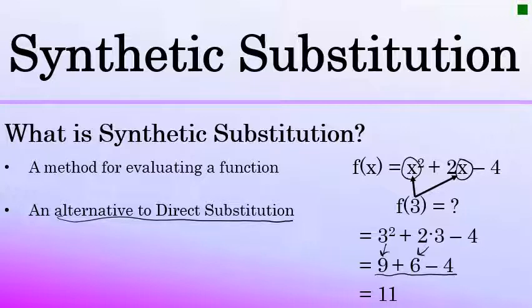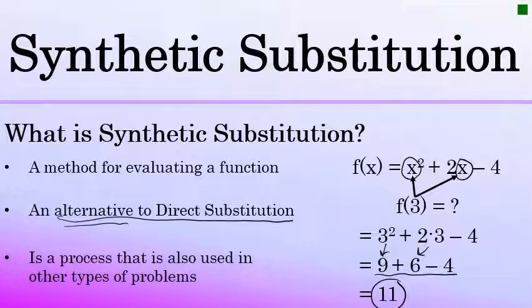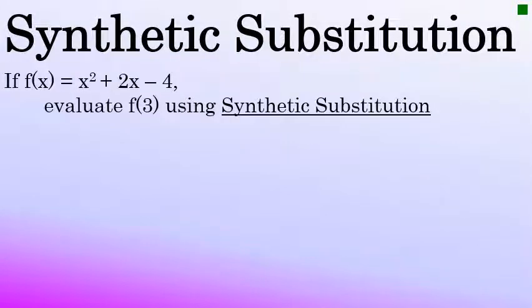Synthetic substitution provides another way to evaluate f of 3 to get to the result of 11. It's worth learning not only because it provides an alternative to direct substitution, but also because the synthetic substitution process can be used to solve other types of problems as well. Now let's talk about how to actually perform a synthetic substitution, using the function f of x equals x to the third plus 2x minus 4, and evaluate f of 3 using the synthetic substitution process.